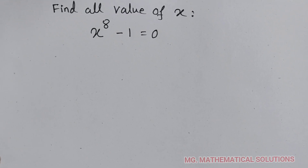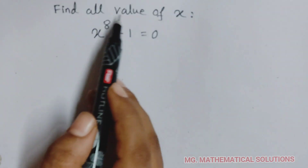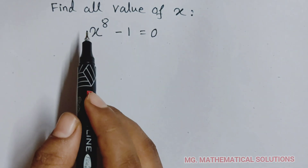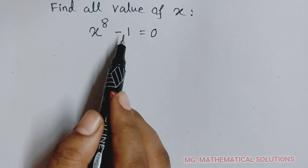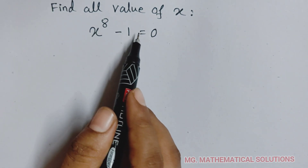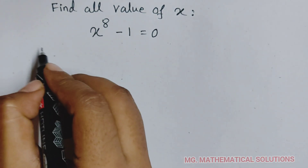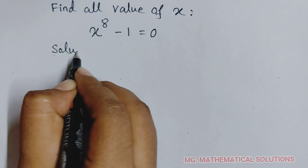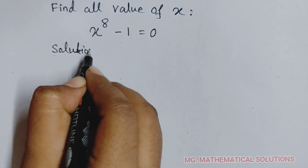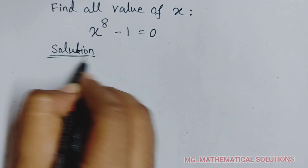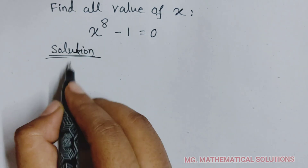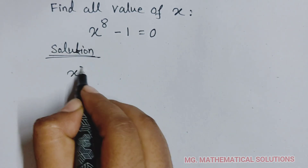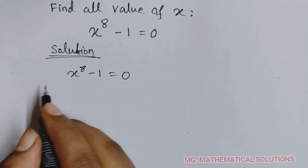Hello students. Today I solve a math olympiad question which is: find all values of x of the equation x to the power 8 minus 1 equal to 0. Let's see the solution. x to the power 8 minus 1 equal to 0.